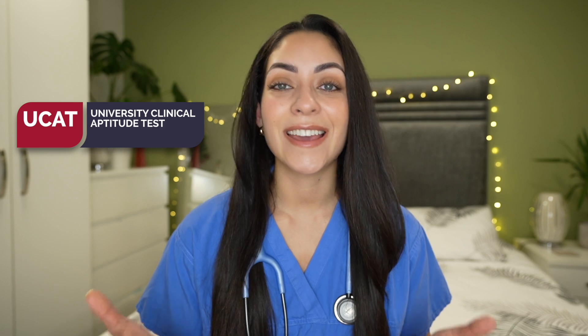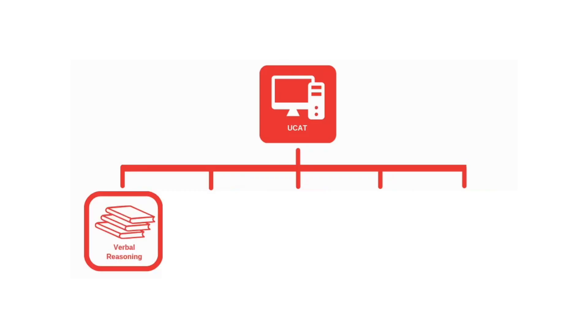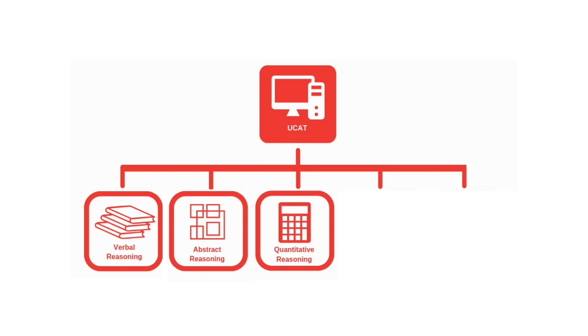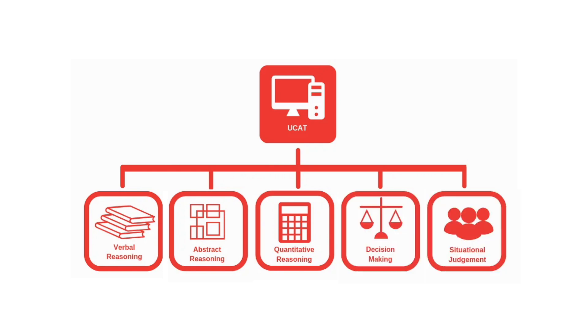The UCAT is a challenging exam, not necessarily because of the types of questions that you're being asked, but mostly because of the time limit for each section. There are five different sections in the exam: verbal reasoning, abstract reasoning, quantitative reasoning, decision making, and a situational judgment test — and each of these asks a specific type of question within a specific time frame.